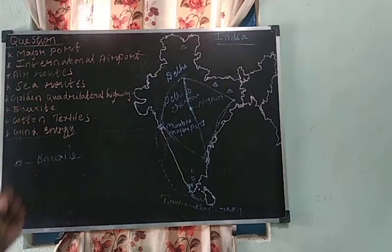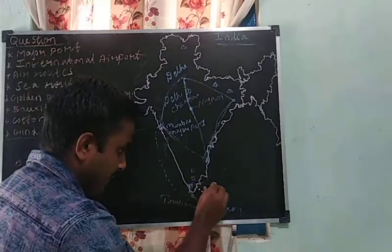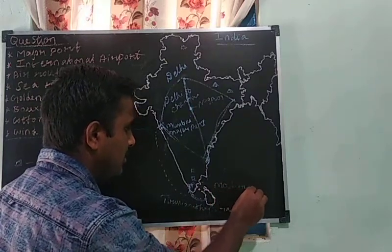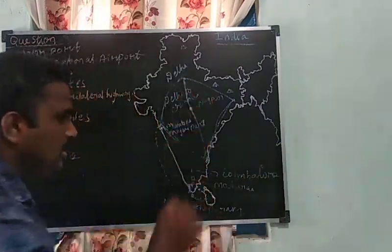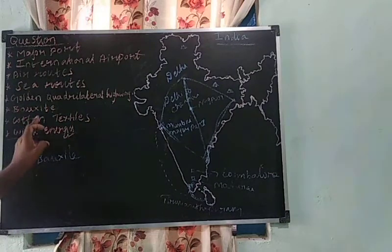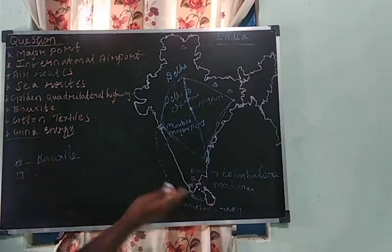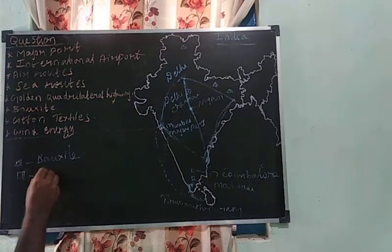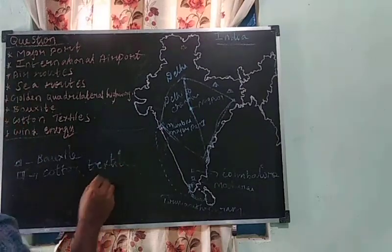Next one is cotton textile. Many crops are available like paddy, cotton, and millet. The places famous for cotton textile are Madurai, Coimbatore, and Mumbai. Mark the symbol given for cotton textile at these locations on the map.